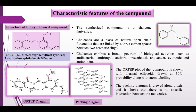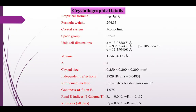The ORTEP and packing diagrams are shown here. The structure of the compound was determined using single-crystal X-ray diffraction method performed at IIT Madras, and after refinement, the following details were extracted from the CIF file. XRD reveals that the crystal has a monoclinic system with P2₁/n space group. The goodness of fit on F-square was found to be 1.075 with a very good R-factor of 0.040.